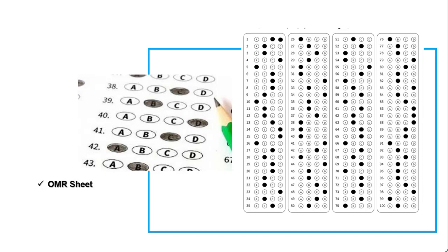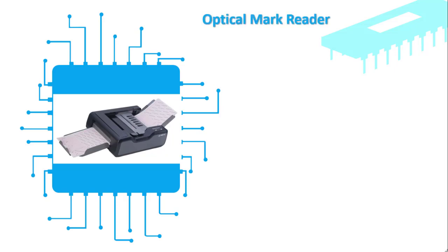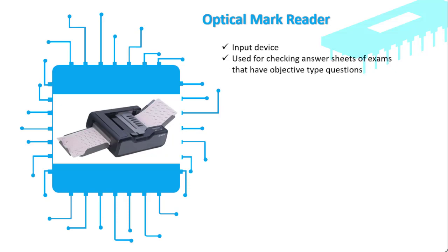The next device is used to give answers to objective type questions like MCQs. We use the OMR sheet for this purpose. The reason we use a machine to check this sheet — rather than humans — is efficiency. This machine is called the optical mark reader, which is an input device used for checking answer sheets of exams that have objective type questions.